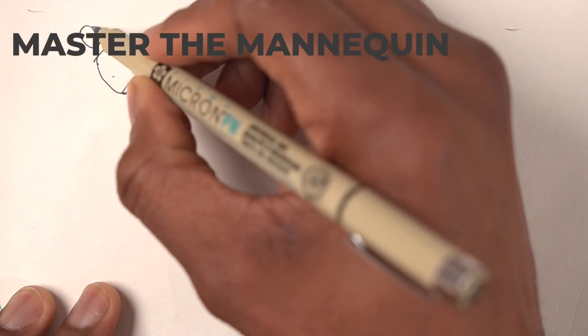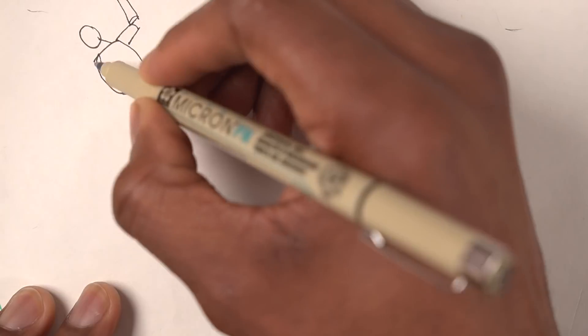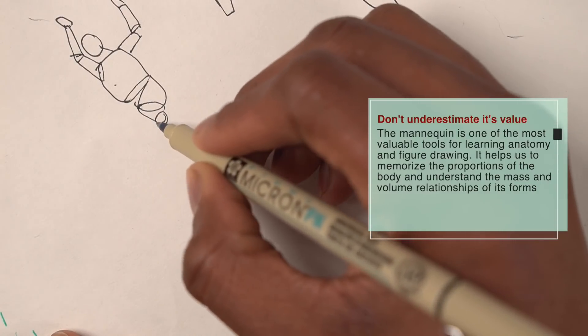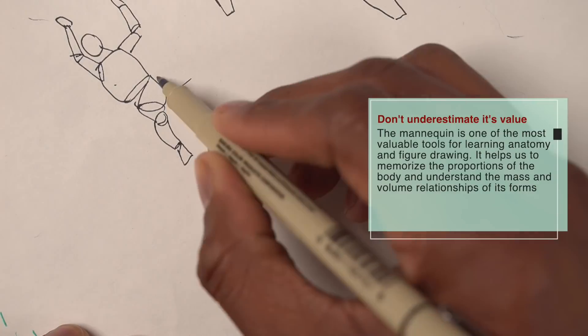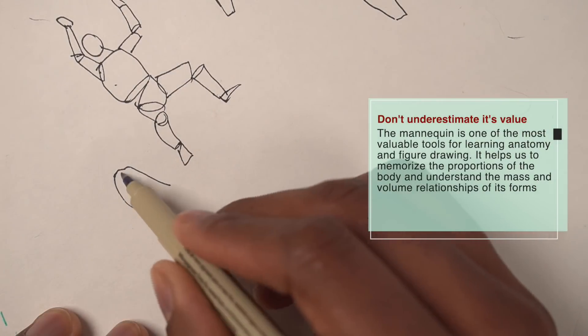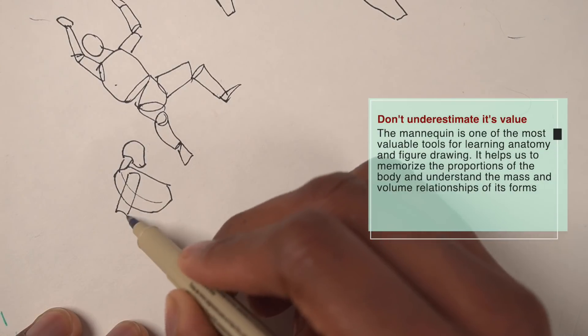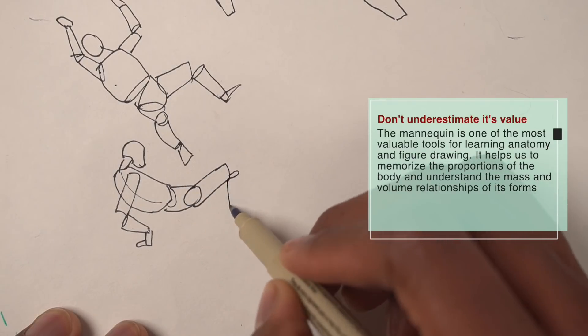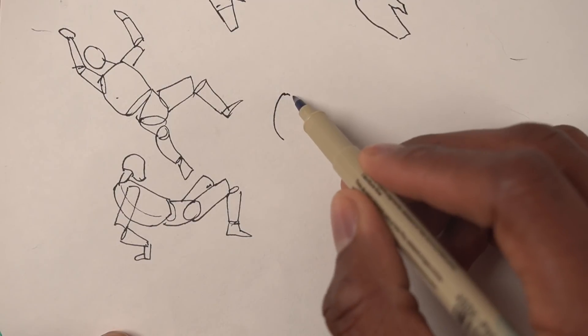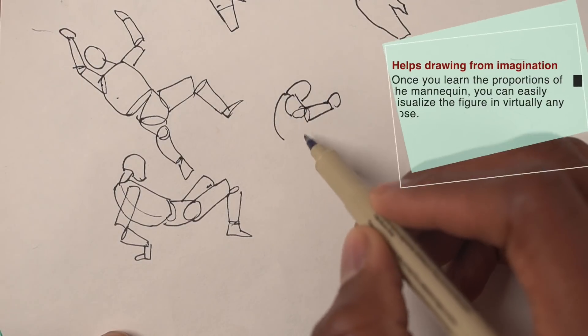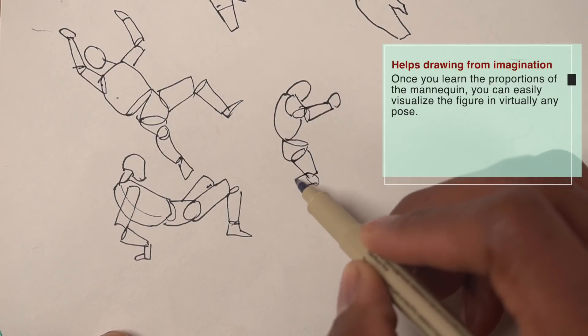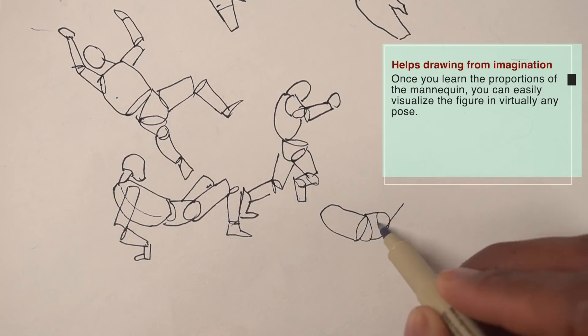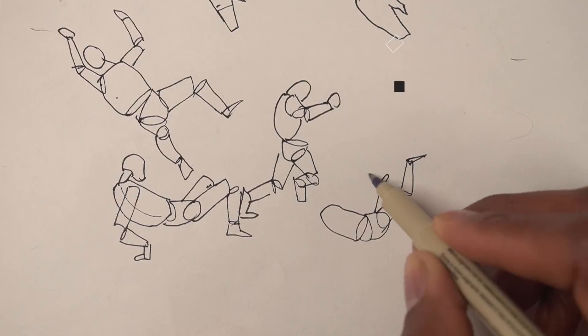The next one is to master the mannequin. The mannequin helps us to memorize the general proportions of the body. It's easy to draw, and it's a basic framework to visualize bones and muscles. Just like with drawing in general, the more you focus on the fundamentals, the easier it is to advance your drawing. It's easier to draw a box or a circle than the human head. If you visualize the head in simple forms, it makes it easier to draw. Likewise with the human figure.